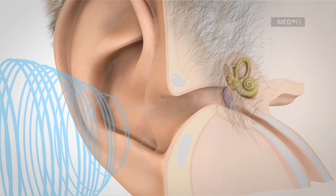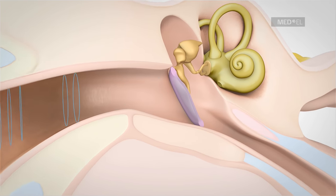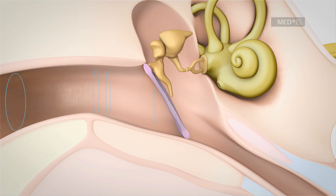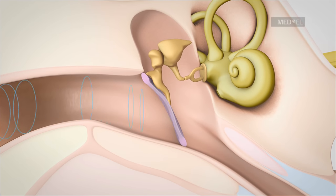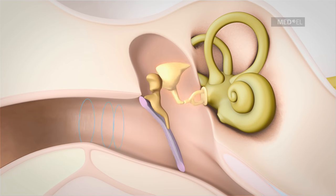Sound enters the ear and is directed through the ear canal where it first reaches the eardrum. As the eardrum begins to vibrate, it sets the ossicular chain in motion. The ossicular chain consists of the hammer, anvil, and the stirrup.